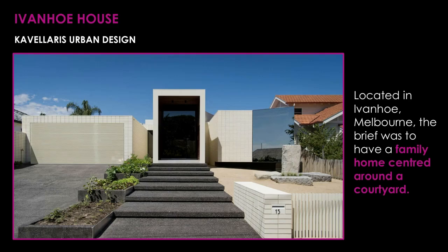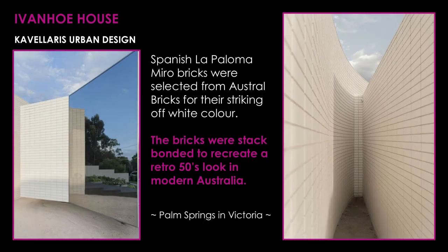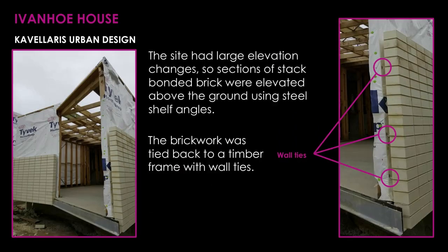The Ivanhoe House by Cavalerous Urban Design (KUD) is located in Melbourne. The brief was to create a family home around a courtyard with a retro, retrofitted aesthetic in modern Australia. The architects chose Spanish Lipari bricks through Austral Bricks for their off-white colour, creating a 1950s Palm Springs feel in Victoria. Because the site had a large elevation from front to back, they decided to elevate the brickwork above the ground so it almost hovers as a floating form.